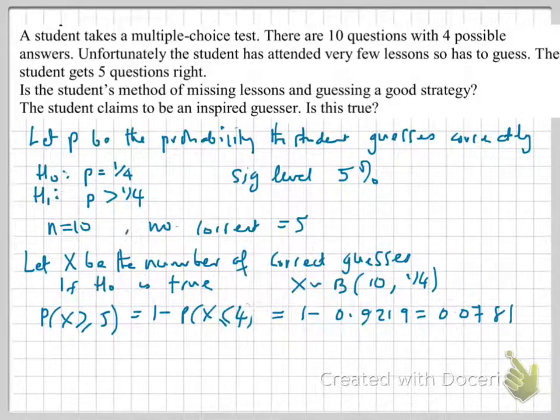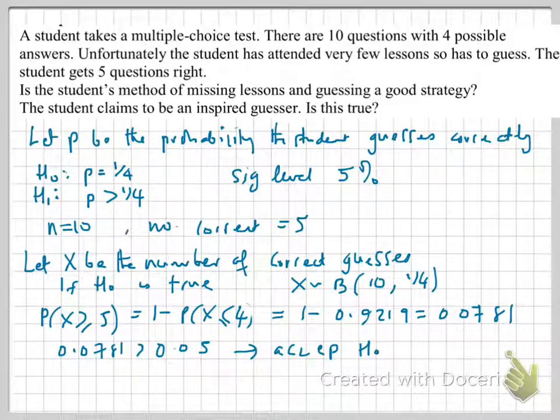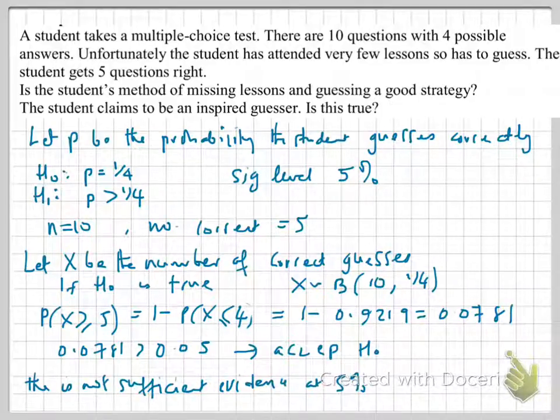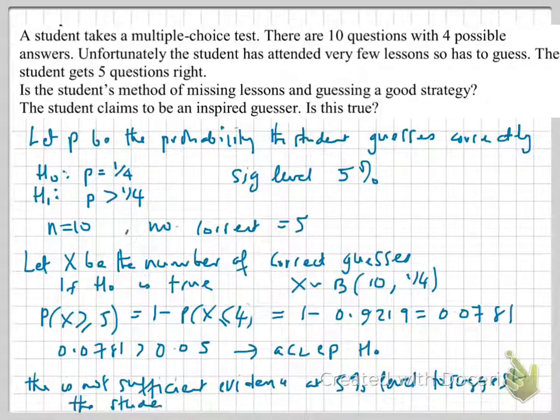Now, it turns out that our value of 0.0781 is, in fact, greater than our 5% significance level. So, we can write down 0.0781 is greater than 0.05. We, therefore, accept our null hypothesis because that probability doesn't fall within the critical region. And we'll conclude with a sentence that says there is not sufficient evidence to suggest that the student is an inspired guesser. So, there is not sufficient evidence at the 5% level to suggest the student is an inspired guesser.